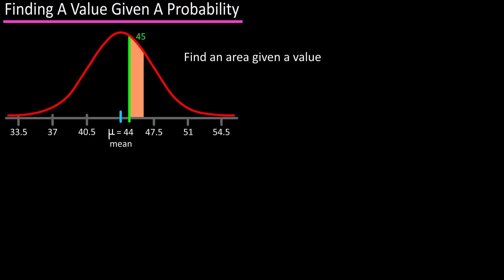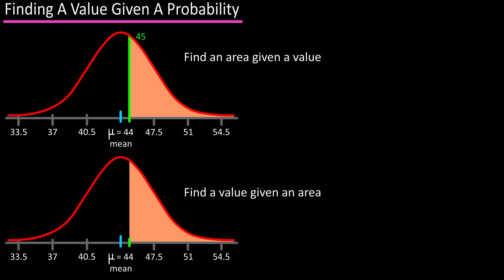In a past video we covered how to find an area or probability under a normal distribution curve, and in this video we're going to cover how to find a specific data value given a probability or area under a normal distribution curve.